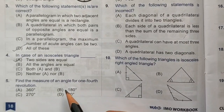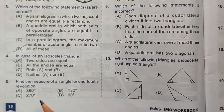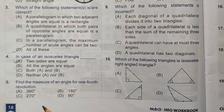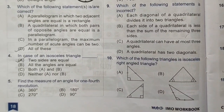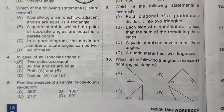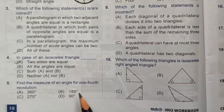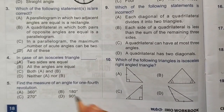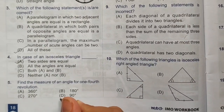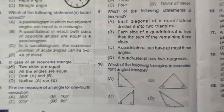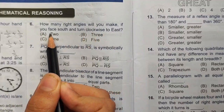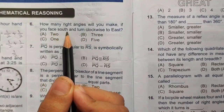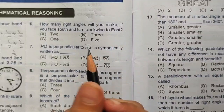Fifth question: Find the measure of an angle for one-fourth revolution. One full revolution is 360 degrees. Dividing 360 by 4 gives 90 degrees, so the measure of an angle for one-fourth revolution is 90 degrees. The correct answer is option D.